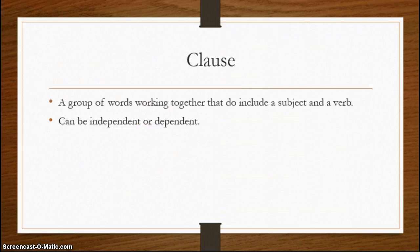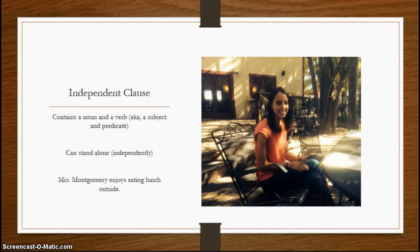A clause is a group of words working together that do include a subject and a verb — or a noun and a verb. And they can be independent or dependent. We're going to start with the independent clauses. Mrs. Montgomery has very kindly volunteered herself as tribute for this. An independent clause must have a noun and a verb — we usually think of a subject and a predicate. And it can stand alone. It can be independent, like Mrs. Montgomery — she's an adult, she's independent, she can take herself out to lunch, she drives her car.